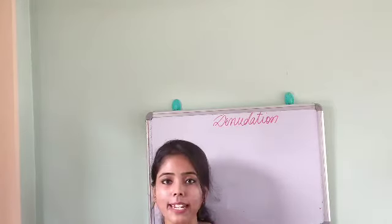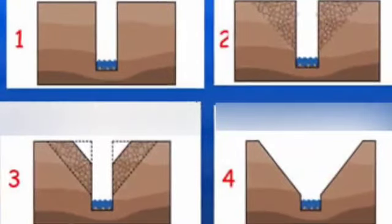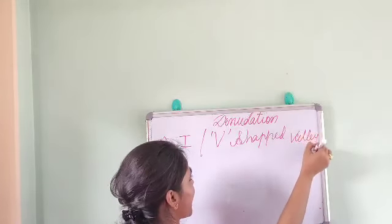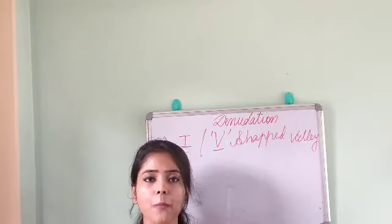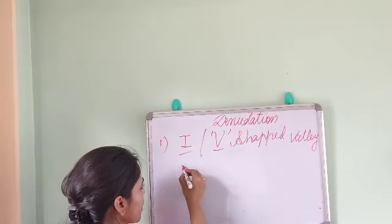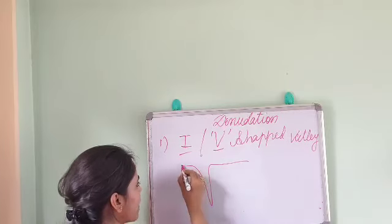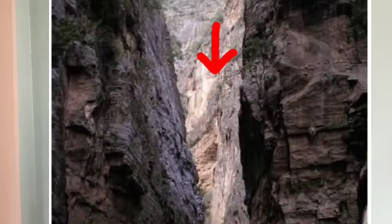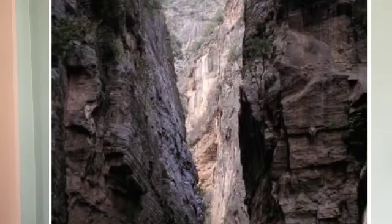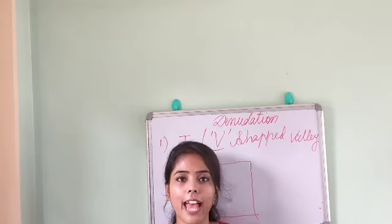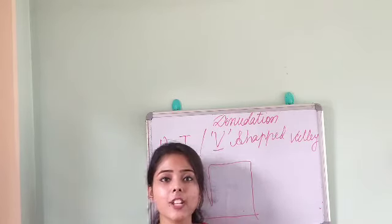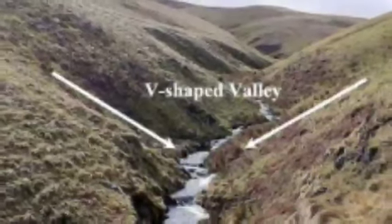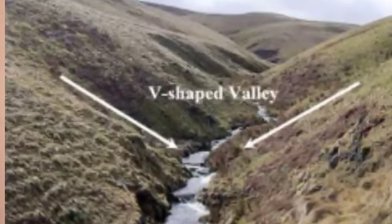Number one is I-shaped and V-shaped valleys. These names come from the English letters I and V, which describe the shape of the valley. When a river's erosional work is directed downward — vertically — it forms an I-shaped valley. When the river erodes the valley sideward — horizontally — it forms a V-shaped valley. The Grand Canyon of the Colorado River is the most famous example of an I-shaped valley.